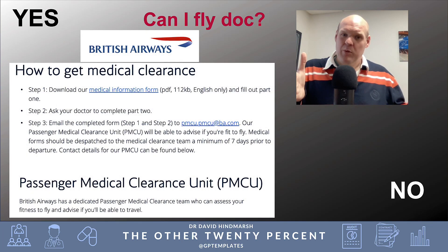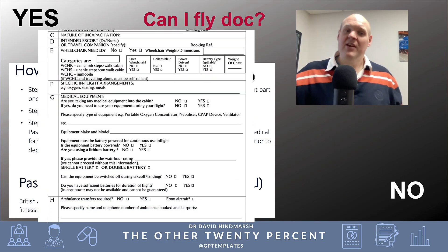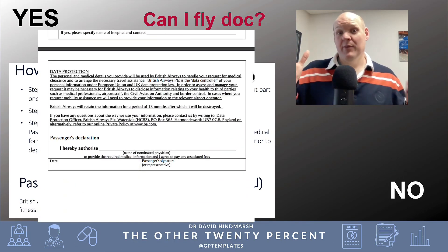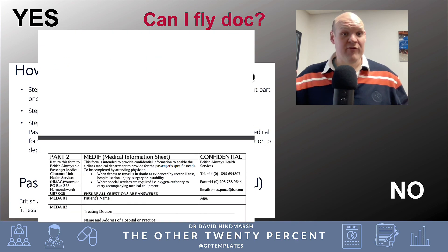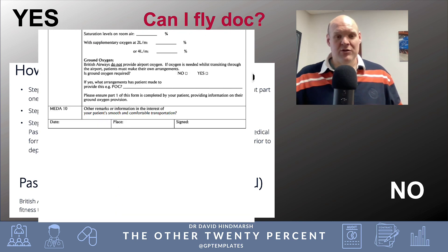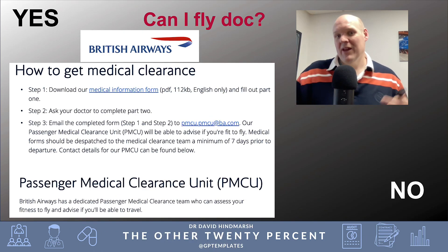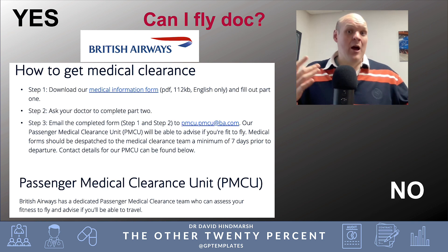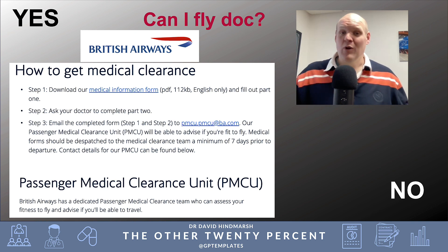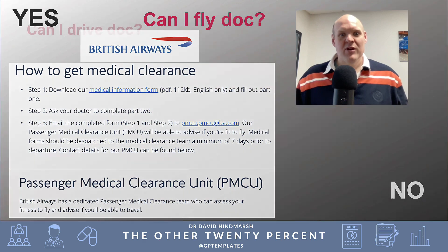Here's an example — I've gone onto British Airways and with a quick Google you can see how to get medical clearance. You download a PDF form; this is for the patient to complete and hand to you to provide the relevant information or to countersign. There's a passenger medical clearance unit, and I suspect there will be a team of aviation doctors and occupational health nurses who oversee this. In this video we'll cover the basics of those rules.